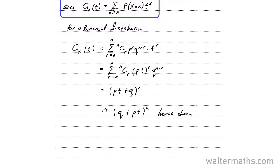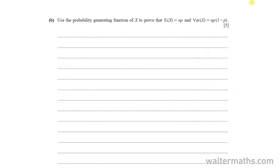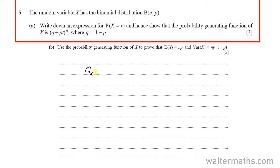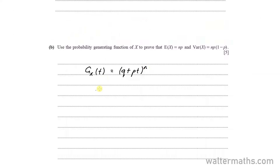Let's go on to Part B. The question says: use the probability generating function of X to prove that E of X is equal to NP and the variance of X is equal to NP times 1 minus P. Remember from Part A, we established that G of T for a binomial distribution can be expressed as Q plus PT to the power of N.